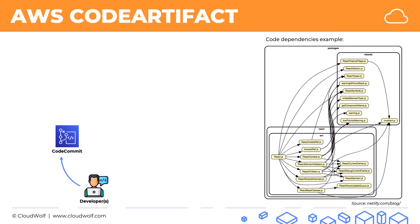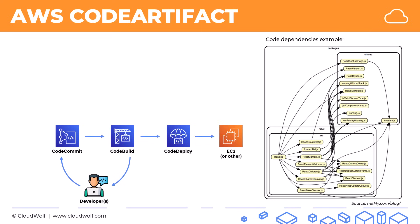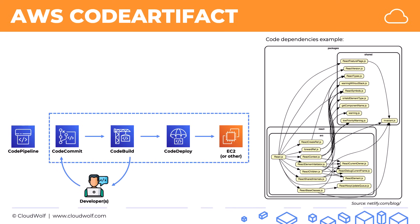Remember our diagram from before when we were talking about CodeCommit and CodeBuild and then CodeDeploy, and deploying that to EC2 or some other destination, and how all of that is part of CodePipeline — that's what we covered in the previous tutorial. CodeArtifact fits in here, so developers can access CodeArtifact to see what dependencies they already have stored there, and that they can use or reference in their new code. It also works directly with CodeBuild, so the new code can actually use these artifacts.